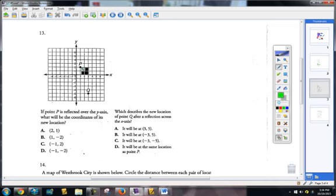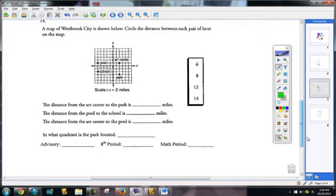Here, here's point P if it is reflected over the Y axis, what will be the coordinates of its new location? We just had these on review number nine. If you're still struggling, look back to your chapter two notes. I believe it's the last learning target in your chapter two notes. You can look back to that same with this one here. It's going to be the same way on that one.